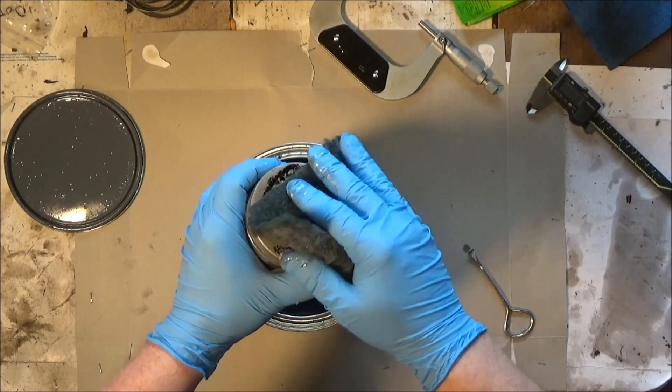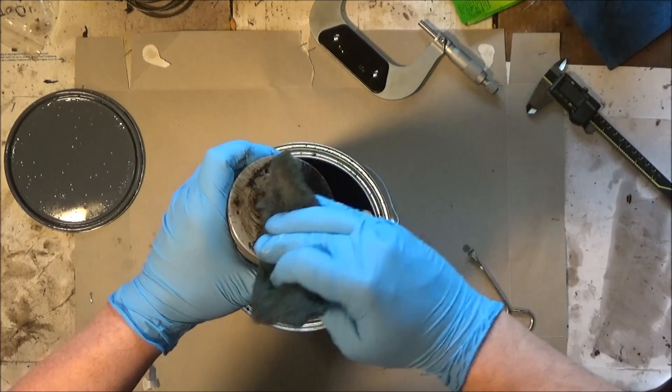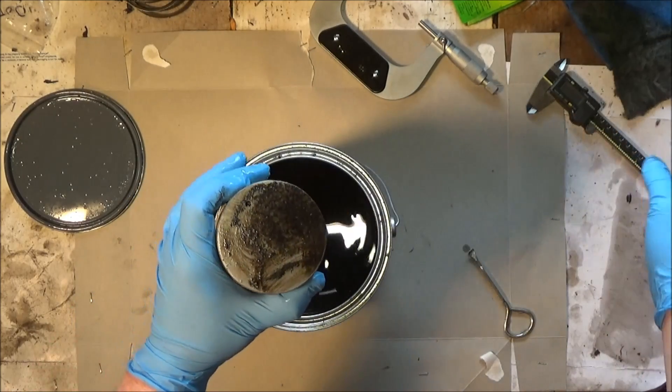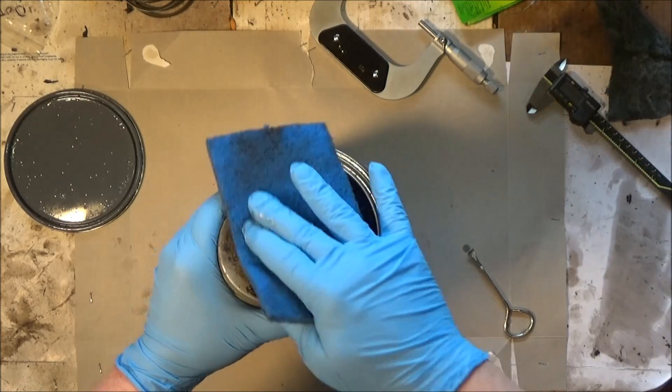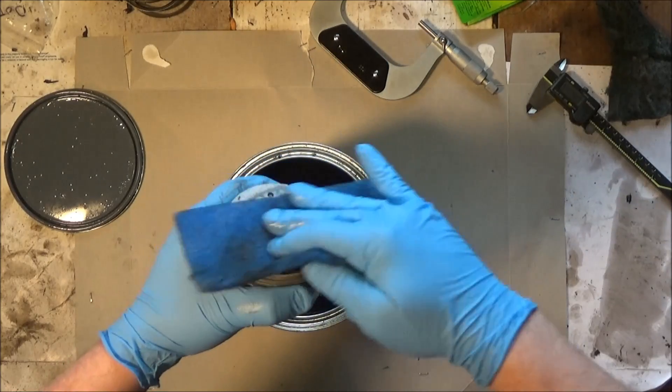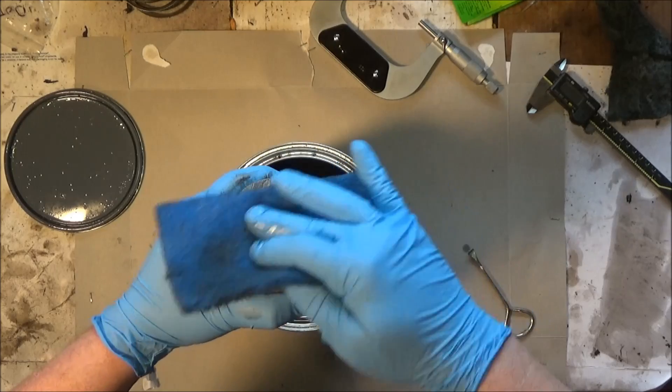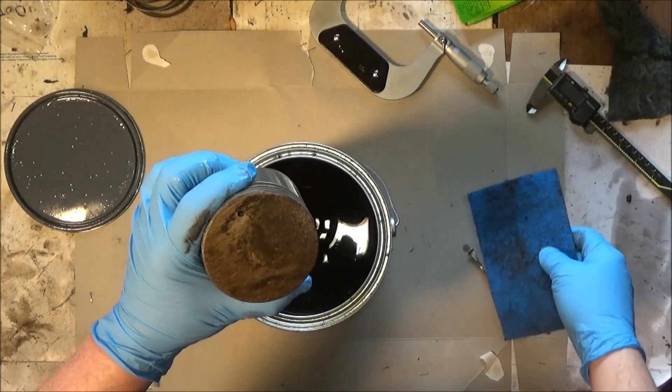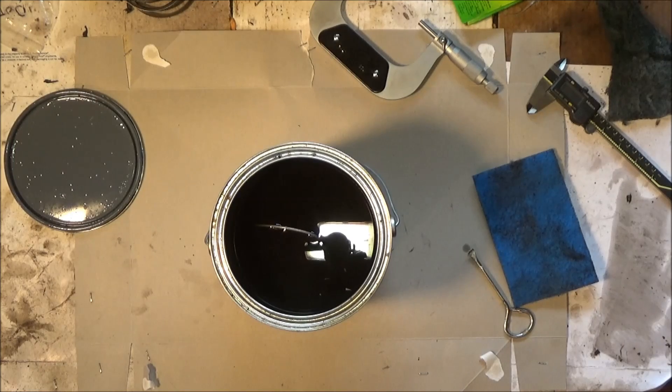Try a little scotch brite. Let me get a blue pad. I'm going to spray it off with a little carburetor cleaner, sort of a rinse.